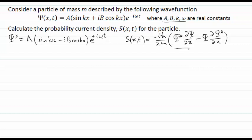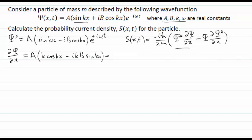The first thing I want to do is compute ψ* times dψ/dx, so let's calculate dψ/dx — taking the derivative with respect to x of our wave function. I'll keep the constant a at the front, take the derivative of sine kx to get k cosine kx, then take the derivative of ib cosine kx to get minus ikb sine kx. The complex exponential has no x-dependence, so I can factor out k to write: k times (a cosine kx minus ib sine kx) times e^{-iωt}.